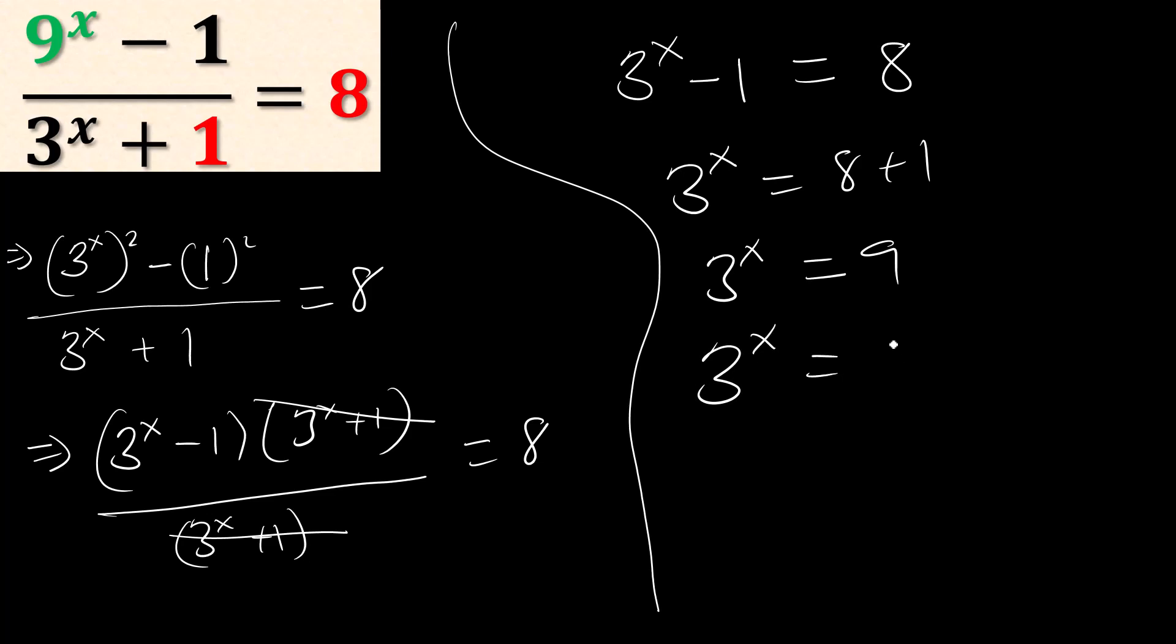So we're left with 3^x minus 1 equals 8. Since the bases are equal, we can equate the powers. Therefore, x equals 2.